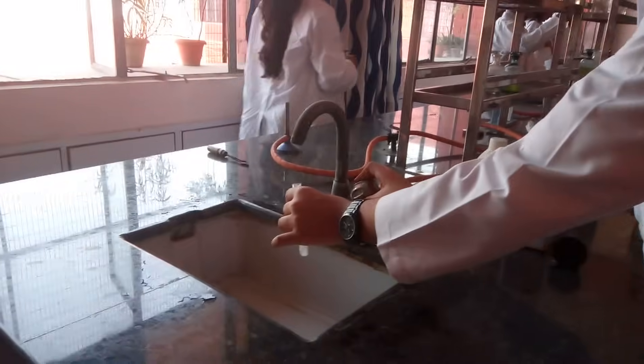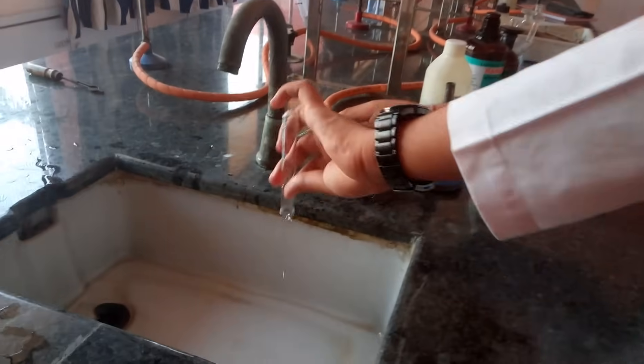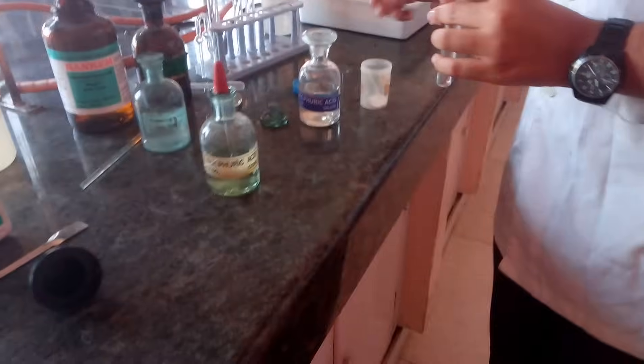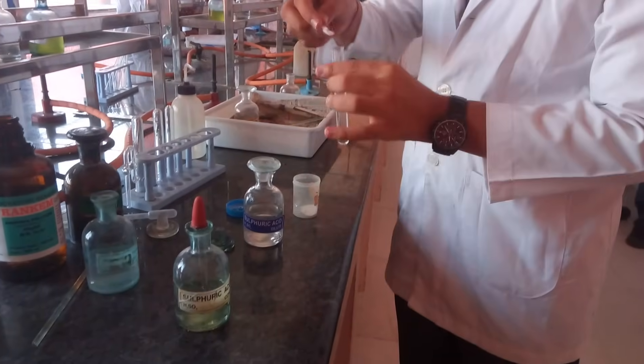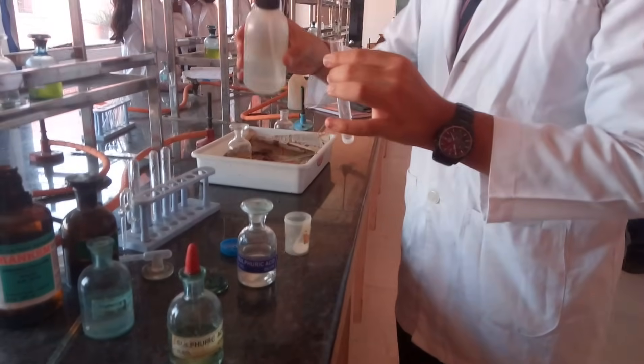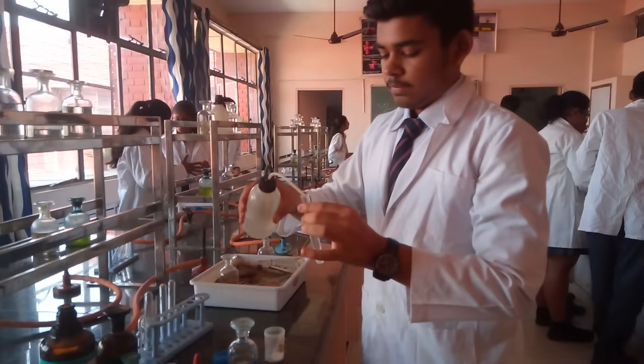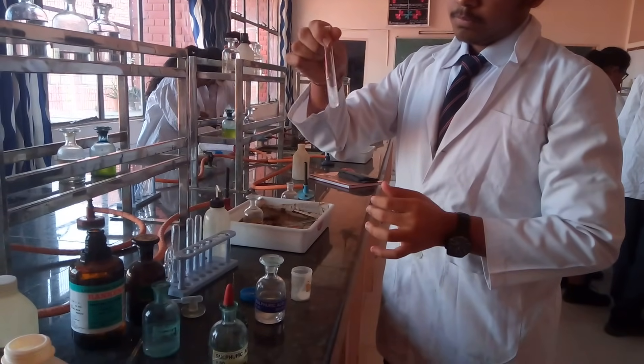Moving to the confirmatory test of chloride, we will discard the contents and use the original solution. In some books it is written as water extract. What do we mean by the original solution? Original solution means salt plus water. Make the original solution. Take a pinch of salt, add water to it, shake it to dissolve it completely.